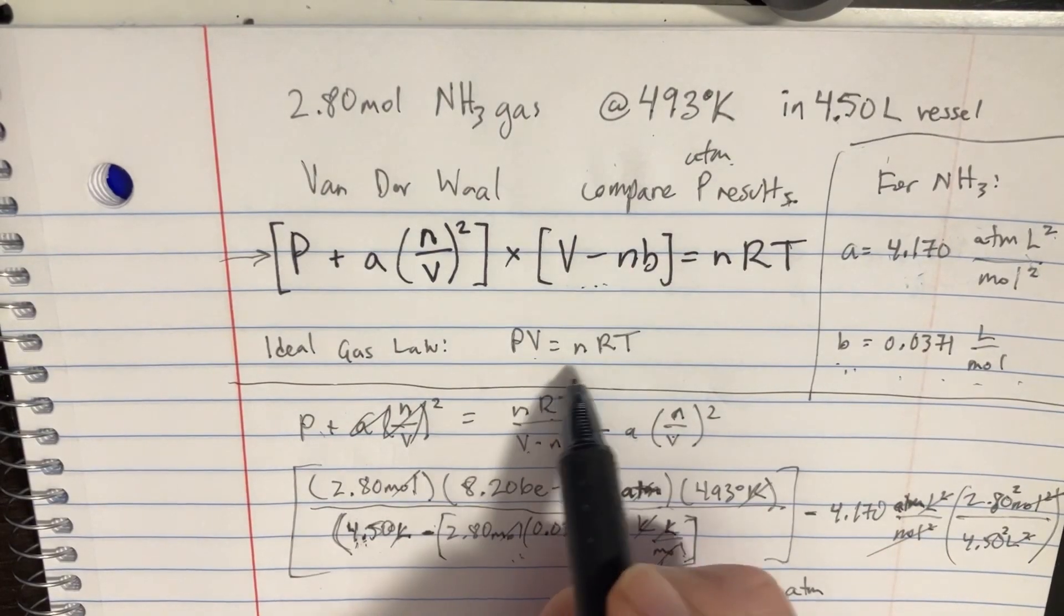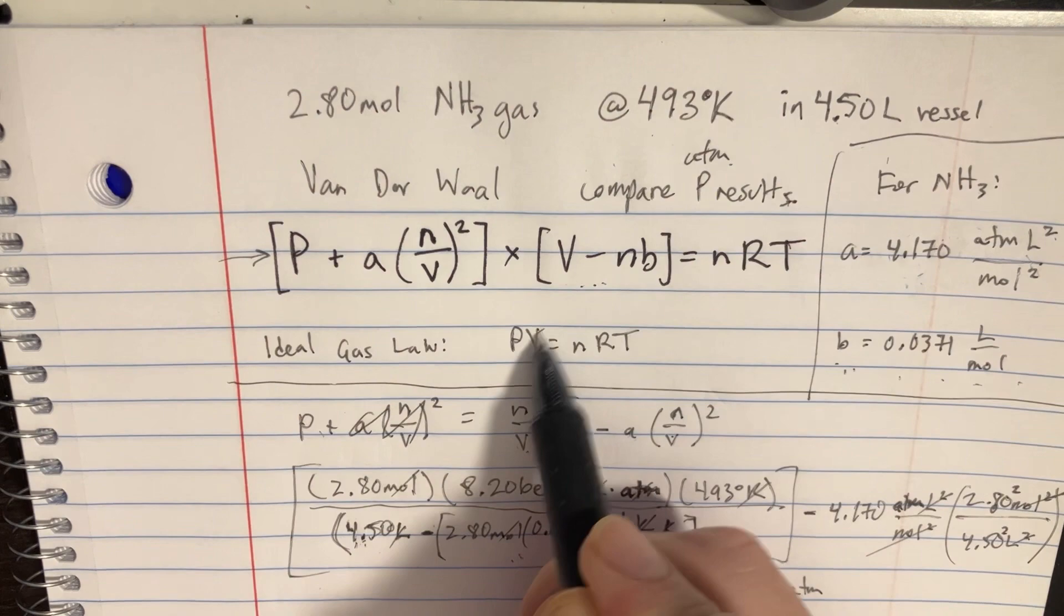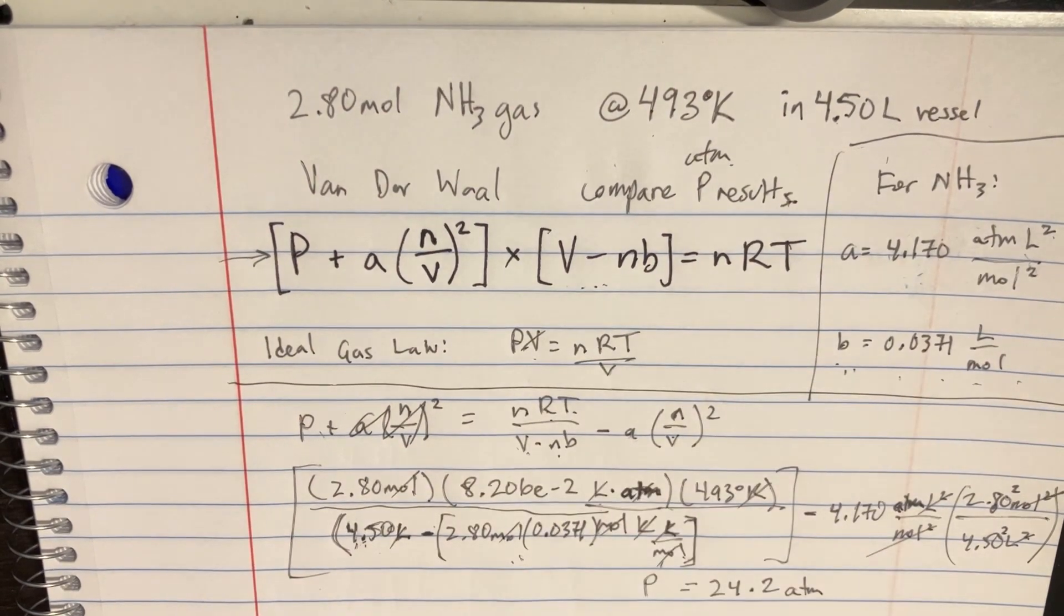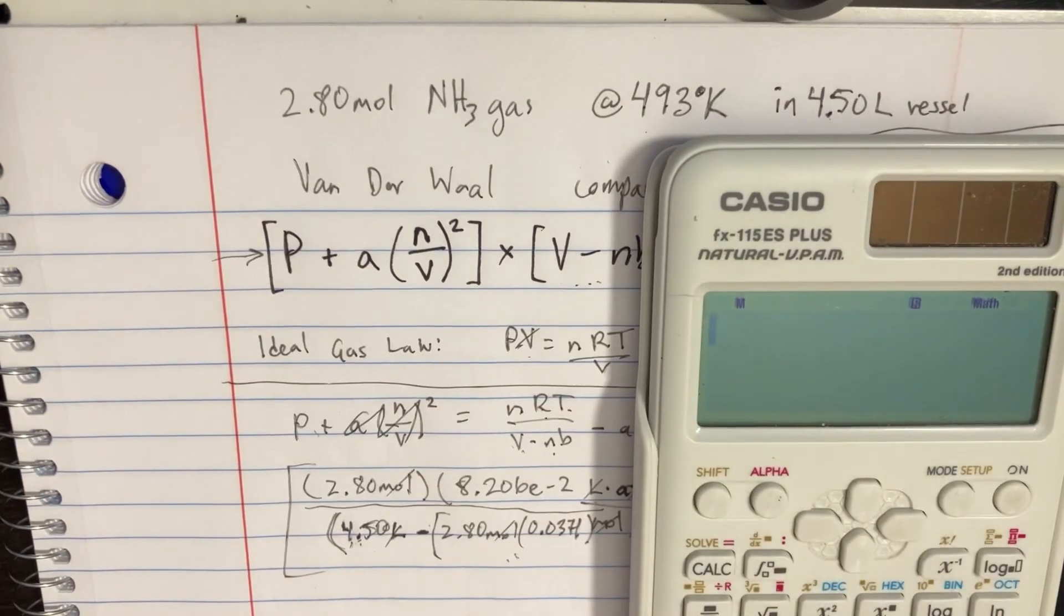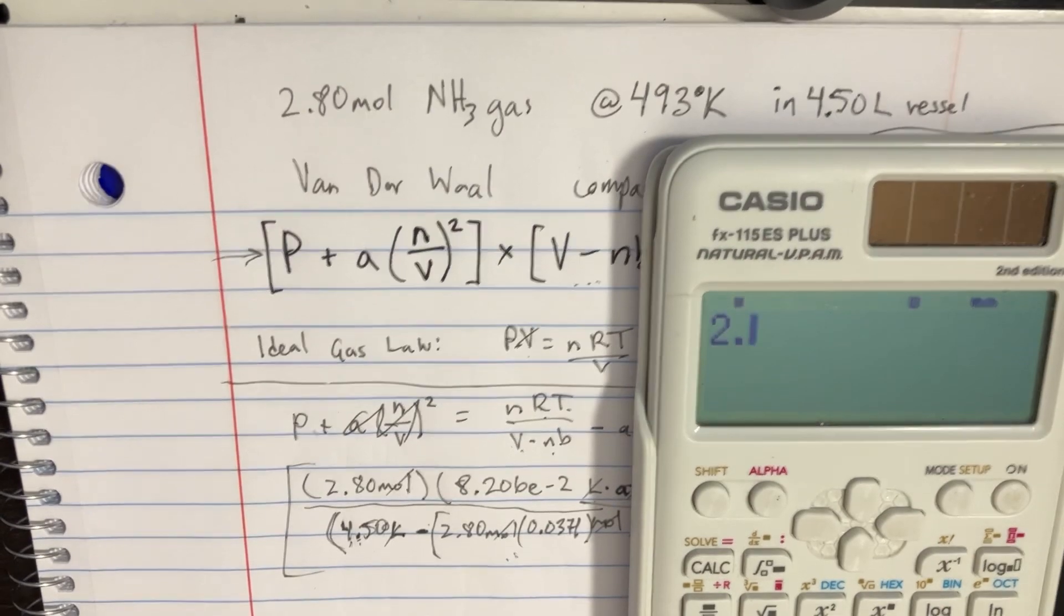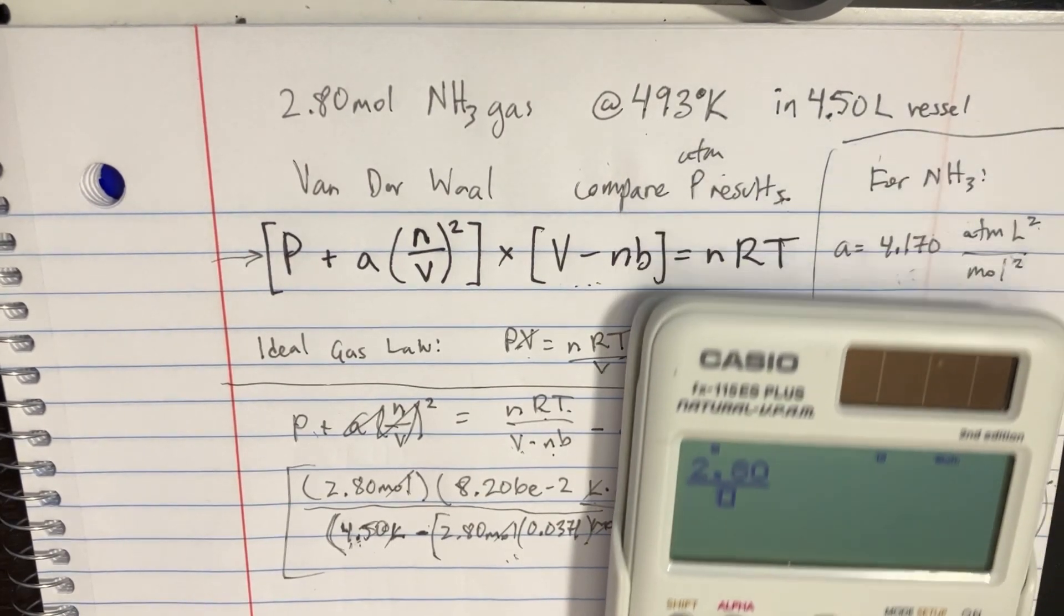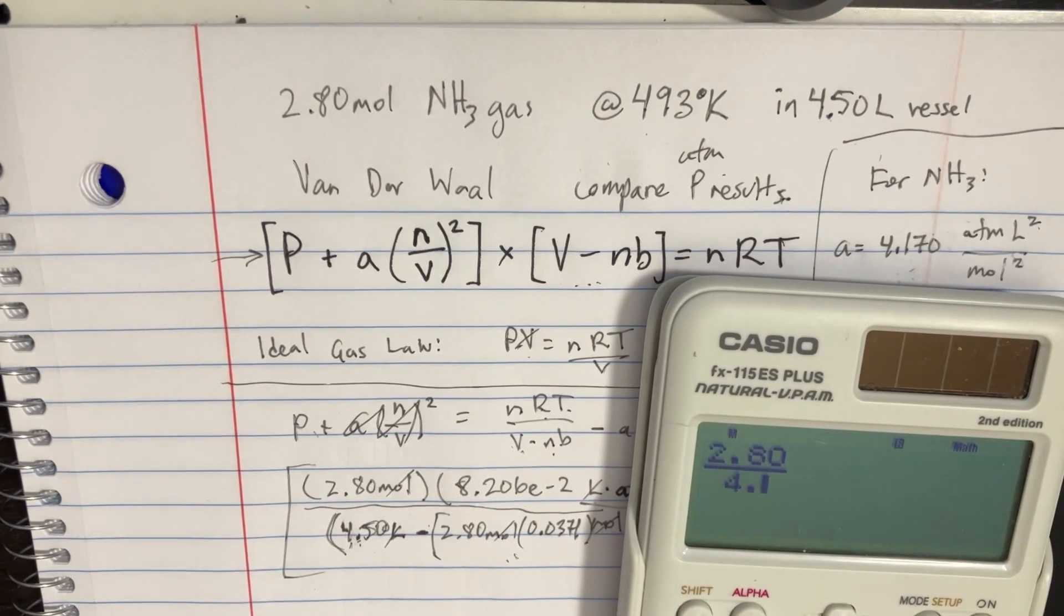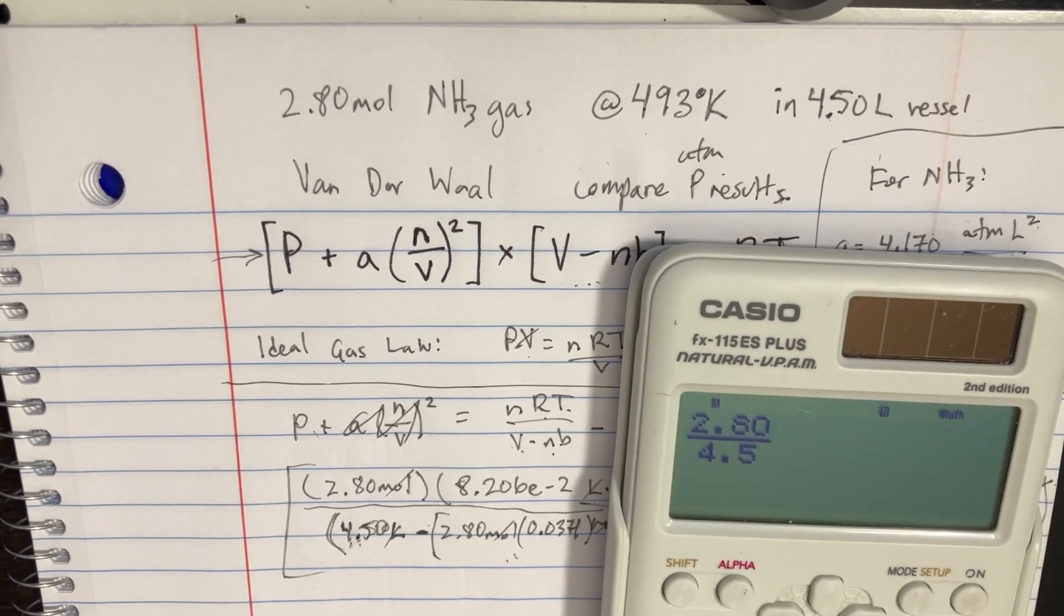If we were to try to solve this for the ideal gas law, we would just divide this by the V. And we plug that in the calculator to see what goes down. We've got 2.8. And then on the bottom, we have 4.5 for the volume. On the top, we're going to use the R from before, 8.206 times 10 to the negative 2.